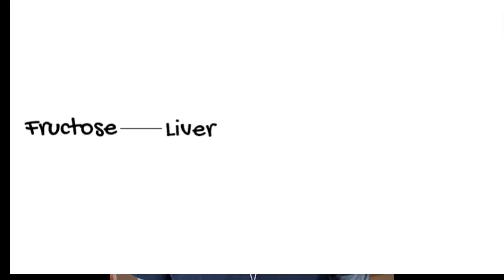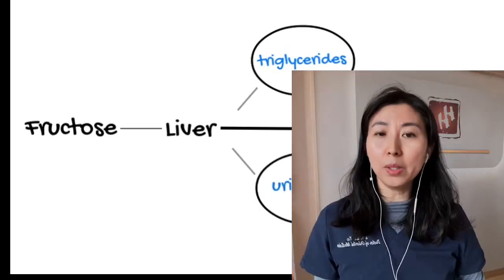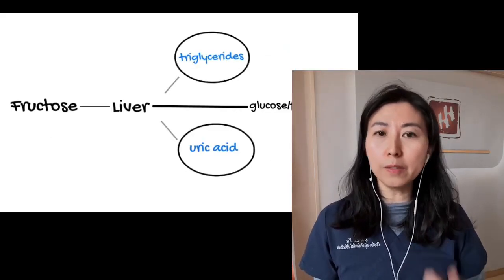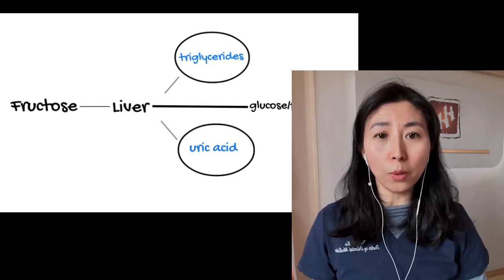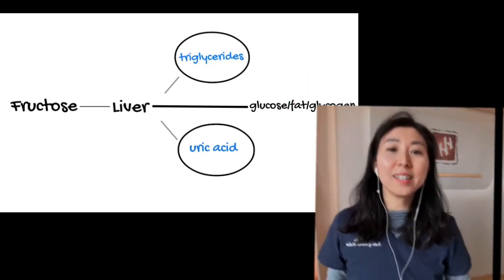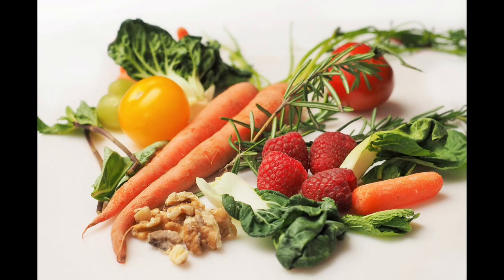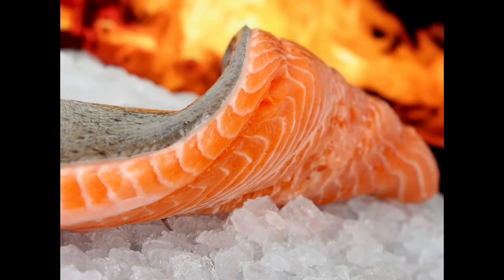It's worth noting that when fructose is metabolized by the liver, it produces triglycerides and uric acid as byproducts. This is important because some people don't drink alcohol, don't eat seafood often, and even have normal total cholesterol levels, yet still have elevated triglycerides or high uric acid. In many cases, consuming foods high in fructose or added sugars — such as juice, soda, and processed food — can be the culprit. It's important to be mindful of what you eat and maintain a balanced diet.